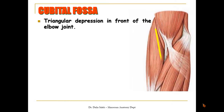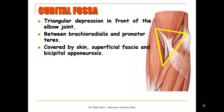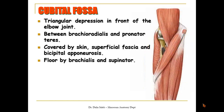The cubital fossa is a triangular impression in front of the elbow joint. It lies between the brachioradialis on the lateral side and the pronator teres on the medial side. It is covered by skin and superficial fascia containing cutaneous nerves and superficial veins, and also by the bicipital aponeurosis. Its floor is made by two deep muscles: the brachialis and the supinator.